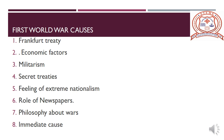The last cause was the immediate cause. A terrorist organization of Serbia known as the Black Hand shot Archduke Ferdinand of Austria and his wife, and both were killed. Austria blamed Serbia for this action. Serbia said the blame was wrong and it had no hand in this matter. But Austria didn't pay any attention and declared war. Thus, the First World War started with this attack.